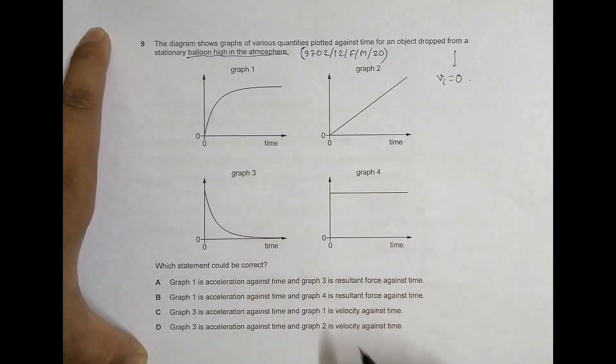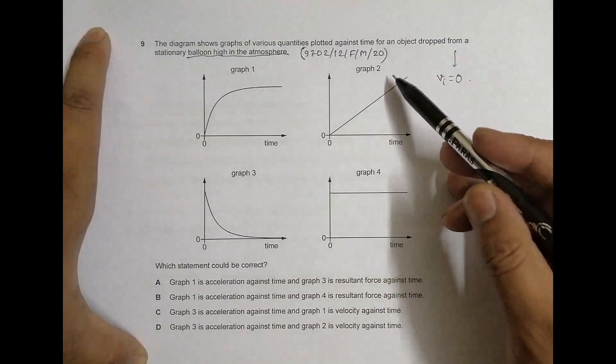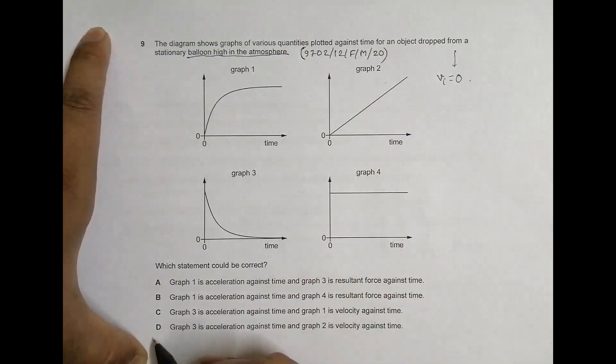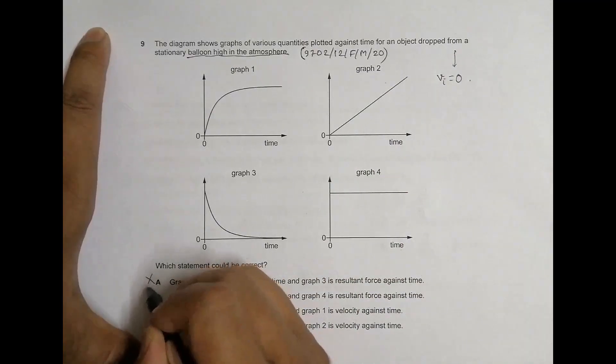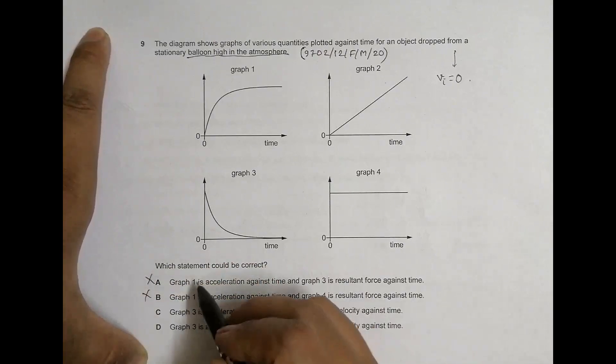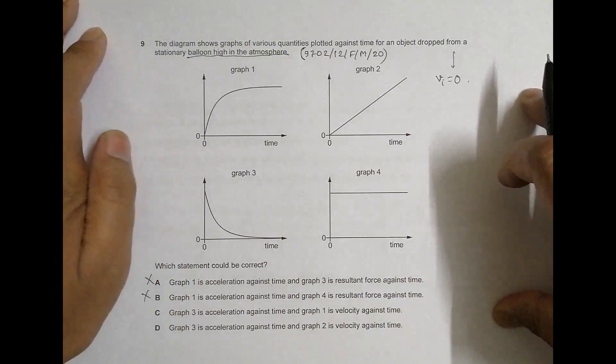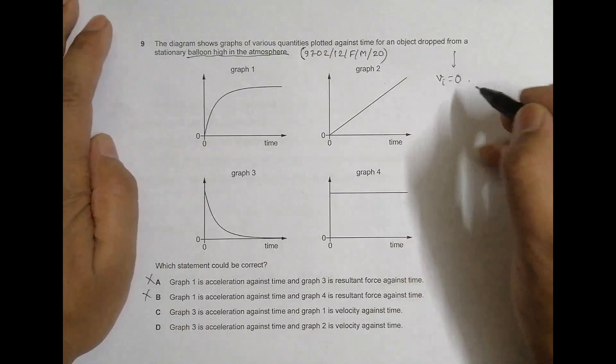So graph 1 velocity, choice C could be the correct choice. Graph 2 velocity, so that means choice D could be the correct choice. Now here it says graph 1 acceleration, so this is wrong. We don't have to care for this. These two are wrong.